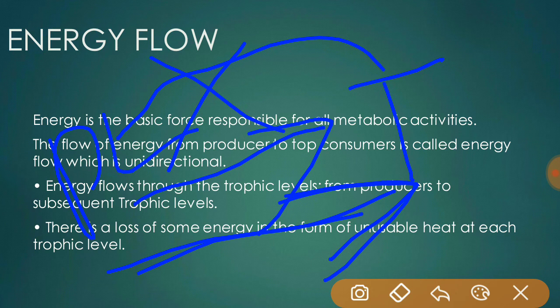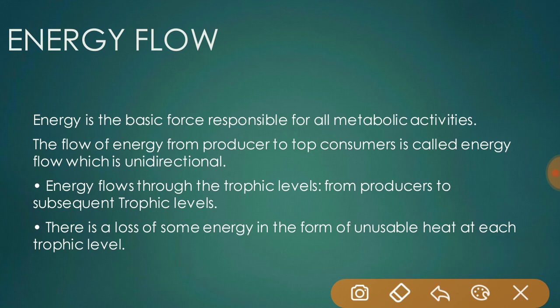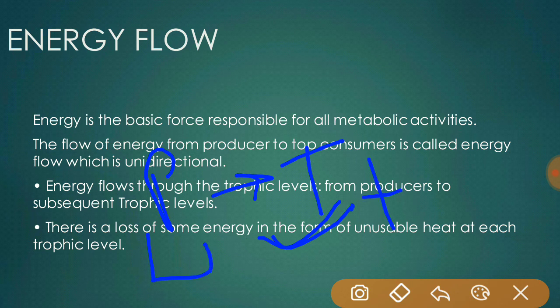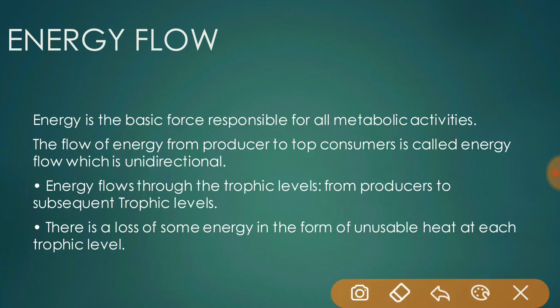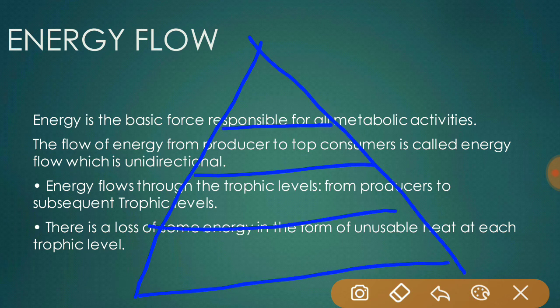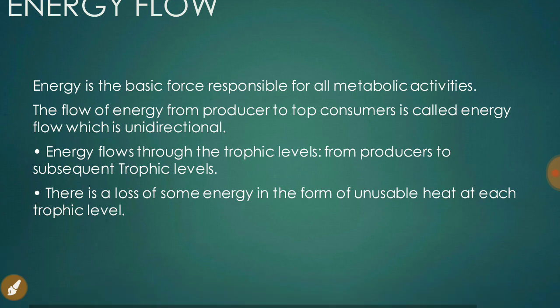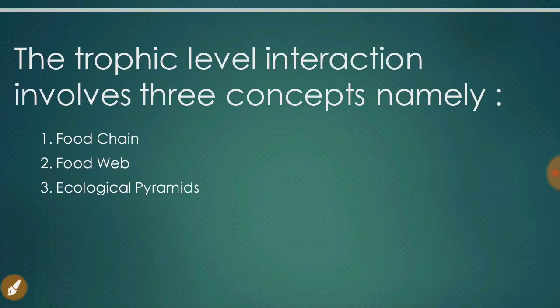The study of trophic level interaction in an ecosystem gives an idea about energy flow through the system. Energy flows through trophic levels from producers to subsequent trophic levels — always from lower to higher trophic levels and never in reverse direction from carnivores to herbivores to producers. There is a loss of some energy in the form of unusable heat at each trophic level, so energy decreases from the first trophic level upward.